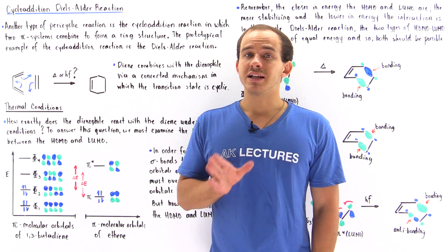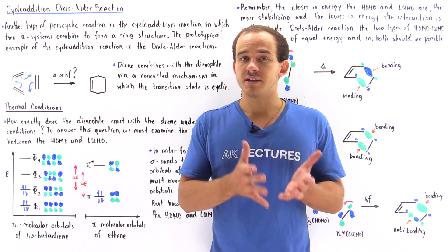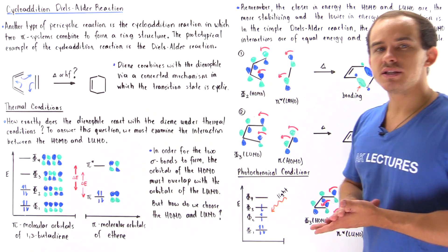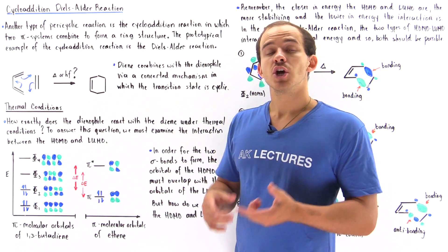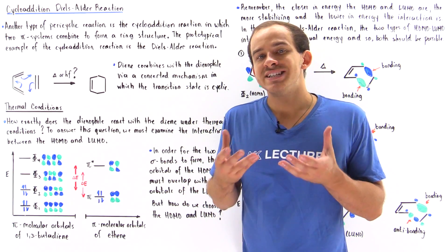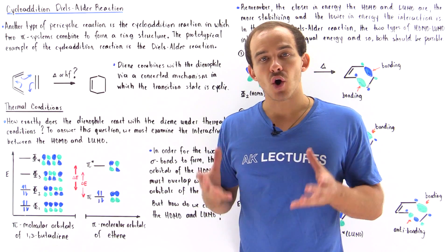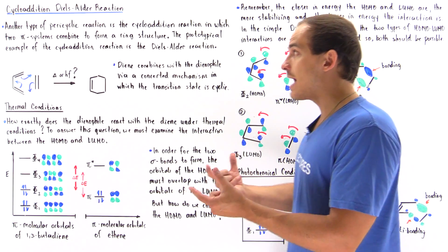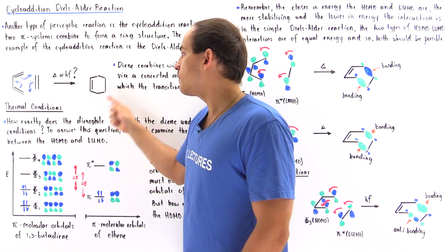Electrocyclic reactions are not the only pericyclic reactions that exist in nature. The second type of pericyclic reaction we're going to discuss is the cycloaddition reaction. Cycloaddition reactions are pericyclic reactions in which two pi systems combine to form a ring structure. The prototypical example of a cycloaddition reaction that we already spoke about is the Diels-Alder reaction, where the two pi systems combine in a single concerted step to form our product.